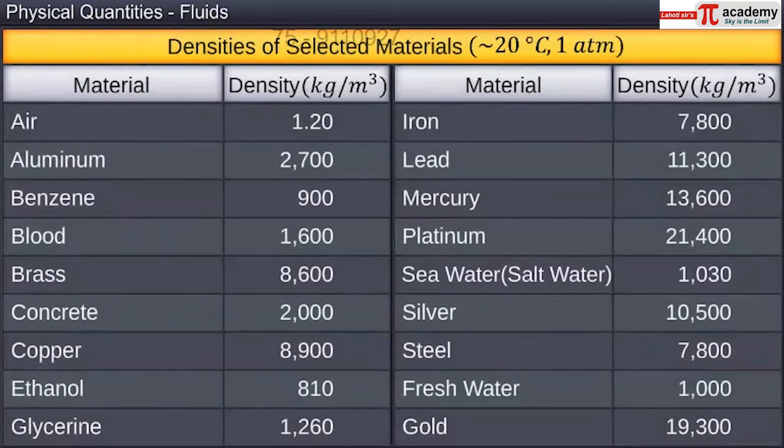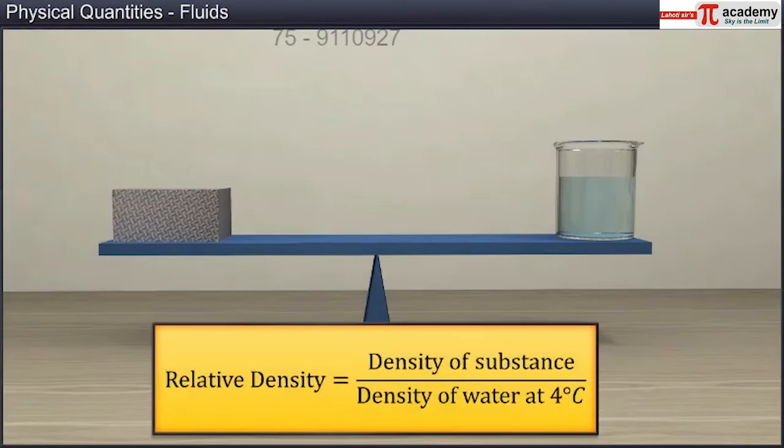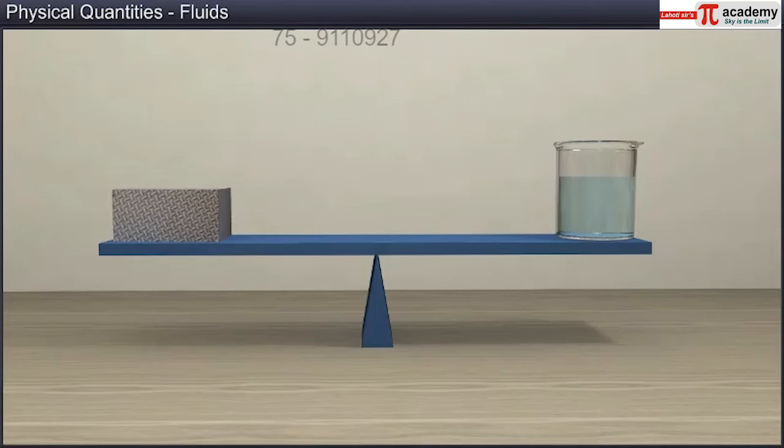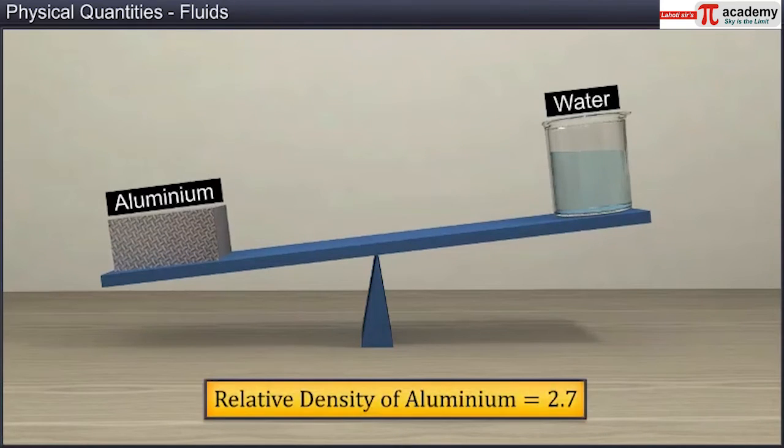As it is not always possible to remember the density of materials with their true units, generally we refer to relative density. Relative density is the ratio of density of the substance to the density of water at 4 degrees Celsius. For example, relative density of aluminum is 2.7.